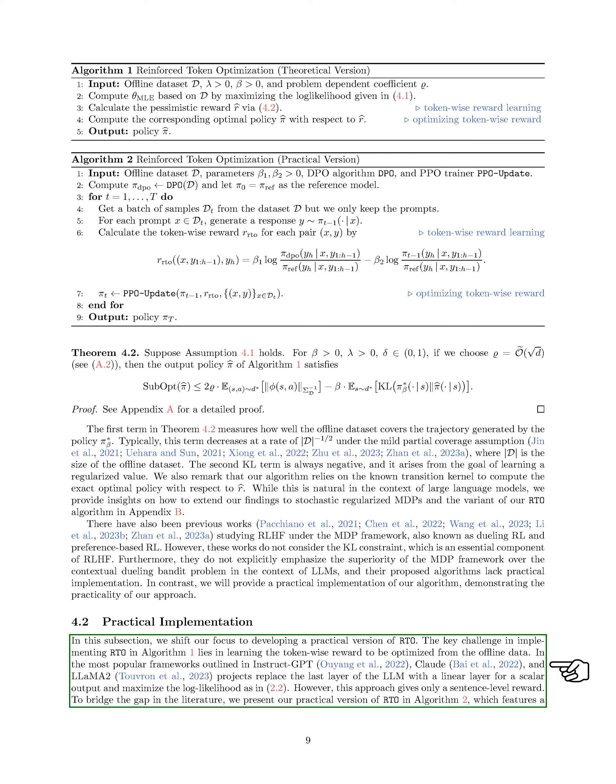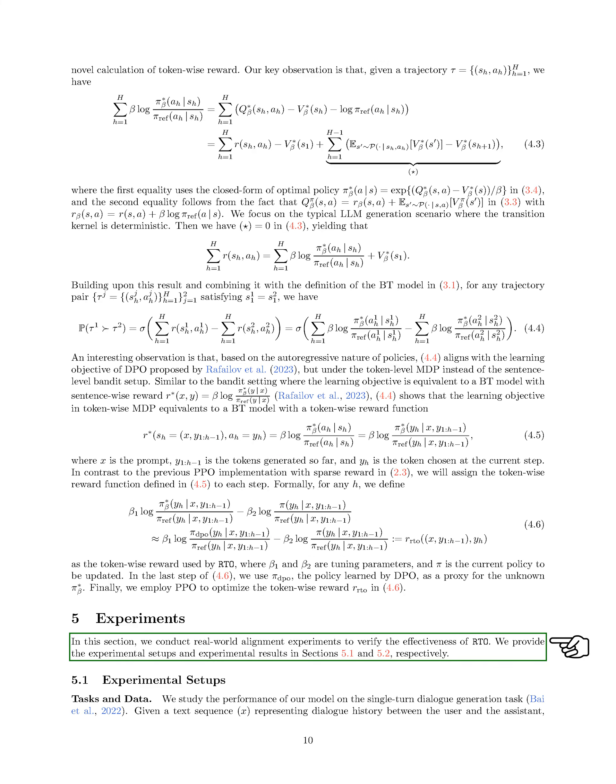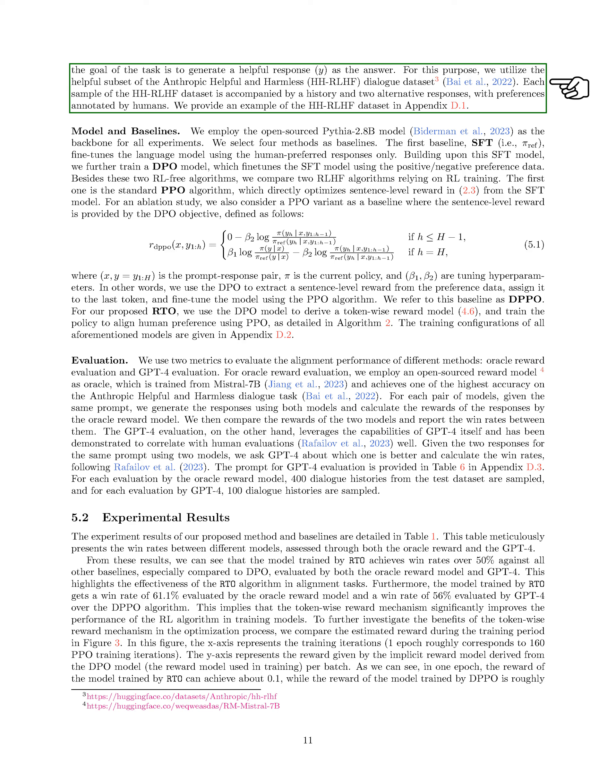In this section, we conducted real-world alignment experiments to confirm the effectiveness of RTO. We focused on the single-turn dialogue generation task using the Anthropic Helpful and Harmless RLHF dialog dataset, which contains dialogue history, user-assistant interactions, and preferred responses annotated by humans. We used the PYTHIA 2.8B model as the base and compared it with four baseline methods. To evaluate performance, we used two metrics: Oracle reward evaluation and GPT-4 evaluation. The Oracle reward evaluation compared rewards given by a pre-trained model on Mistral-7B, while the GPT-4 evaluation relied on GPT-4's judgment of response quality.